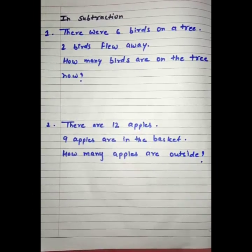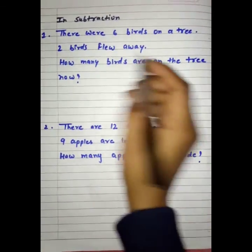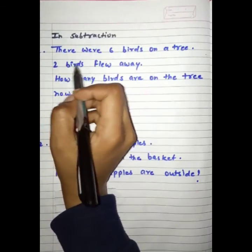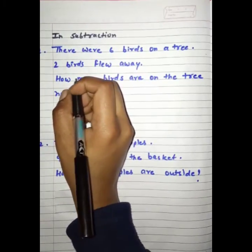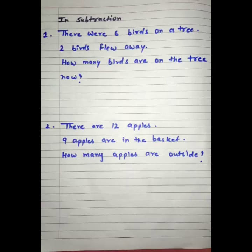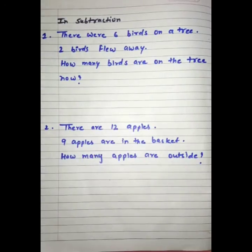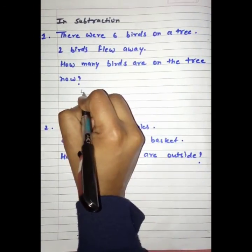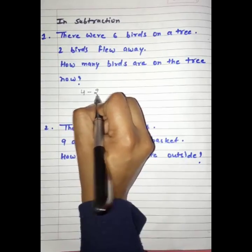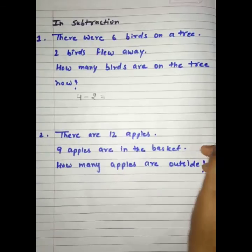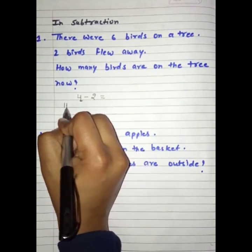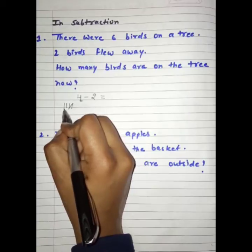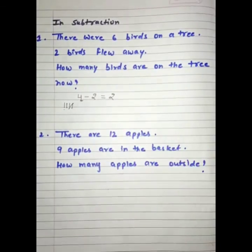Ab hum karenge subtraction mein word problems. See the first question: there were 6 birds on a tree. 2 birds flew away. Ek tree par 6 birds thay and 2 birds uđ gai. How many birds are on the tree now? Hum 4 lines draw karenge and 2 minus kar denge. Humare paas kitnay bachye: 1, 2. We have 2 birds on a tree.